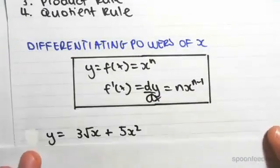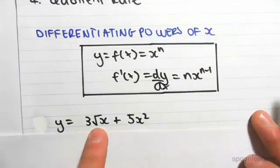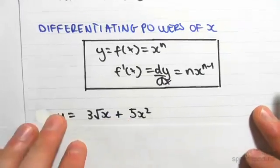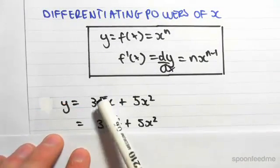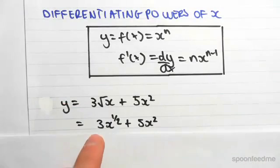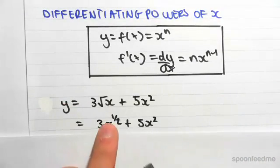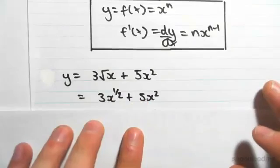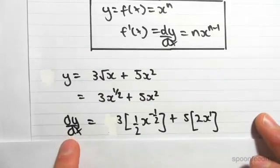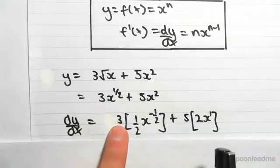As an example, if we have y equals 3√x plus 5x², it's always good to write that in fractional indices. So we know that's the same as 3x^(1/2) plus 5x². Now differentiating this with respect to x: